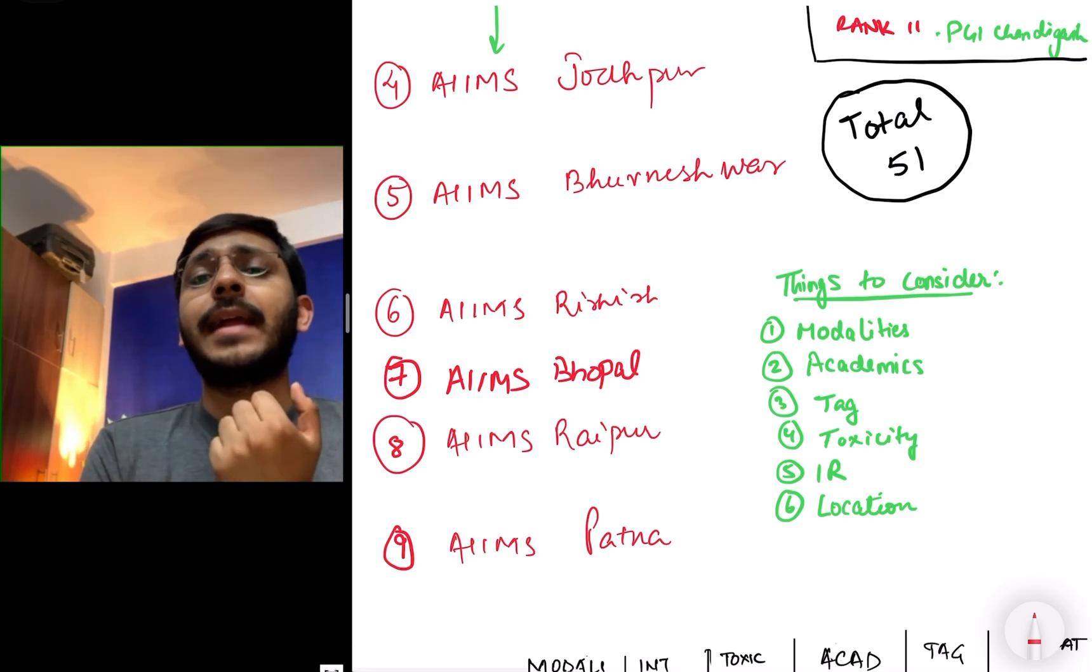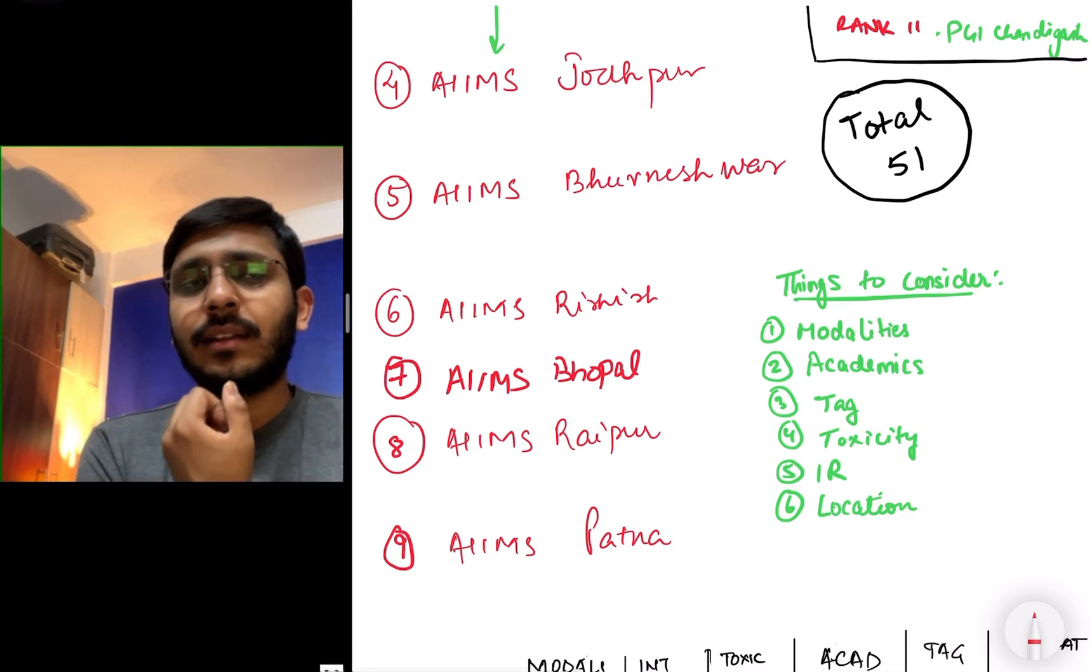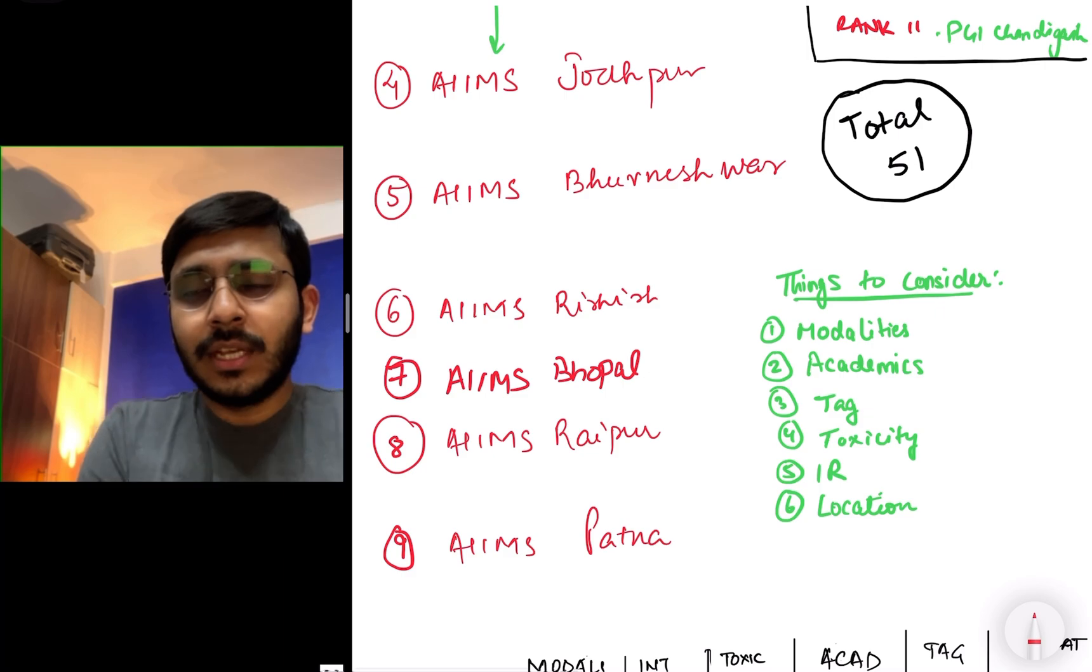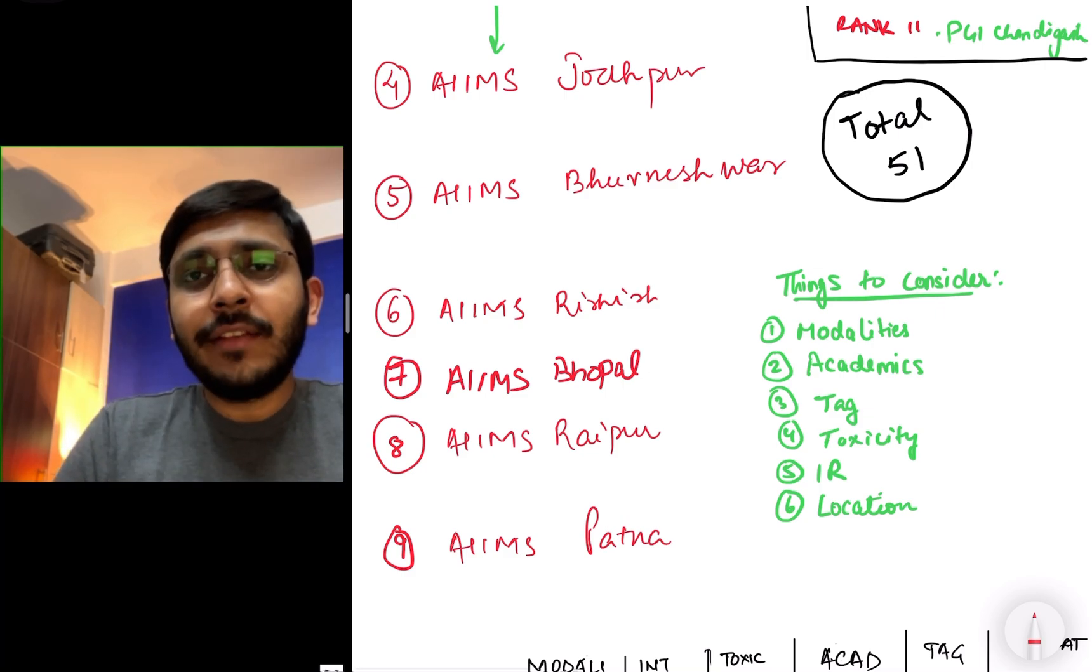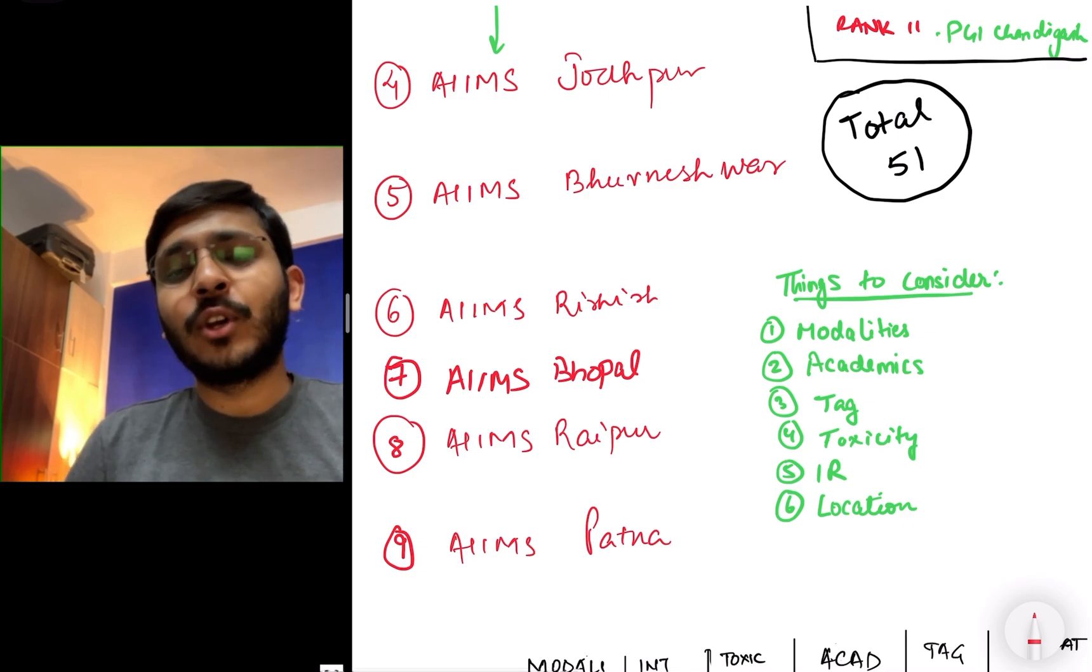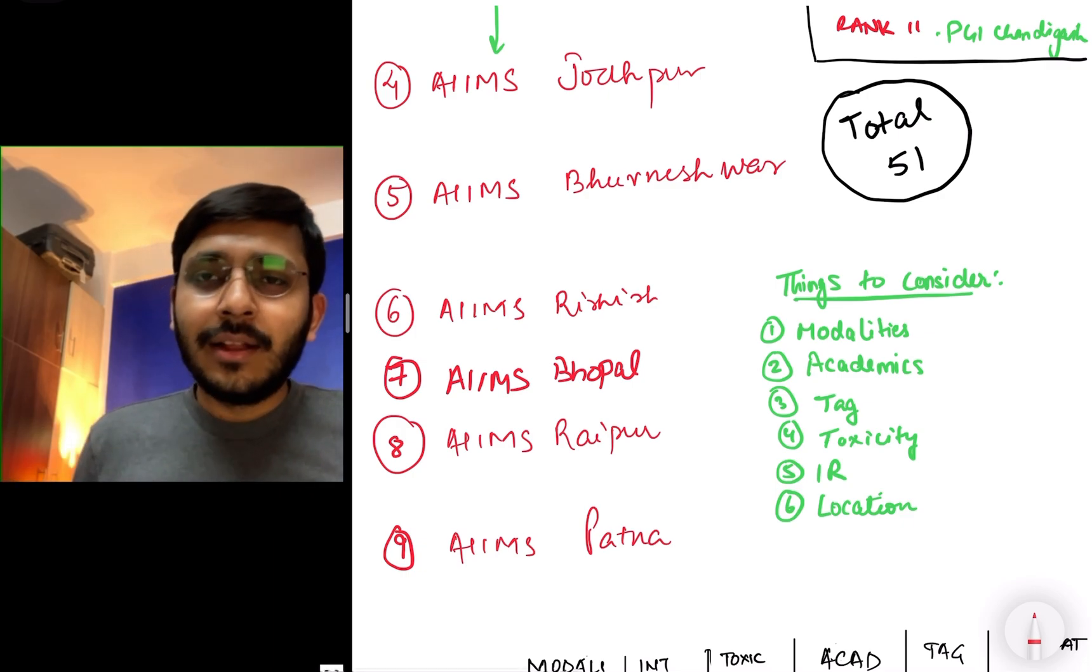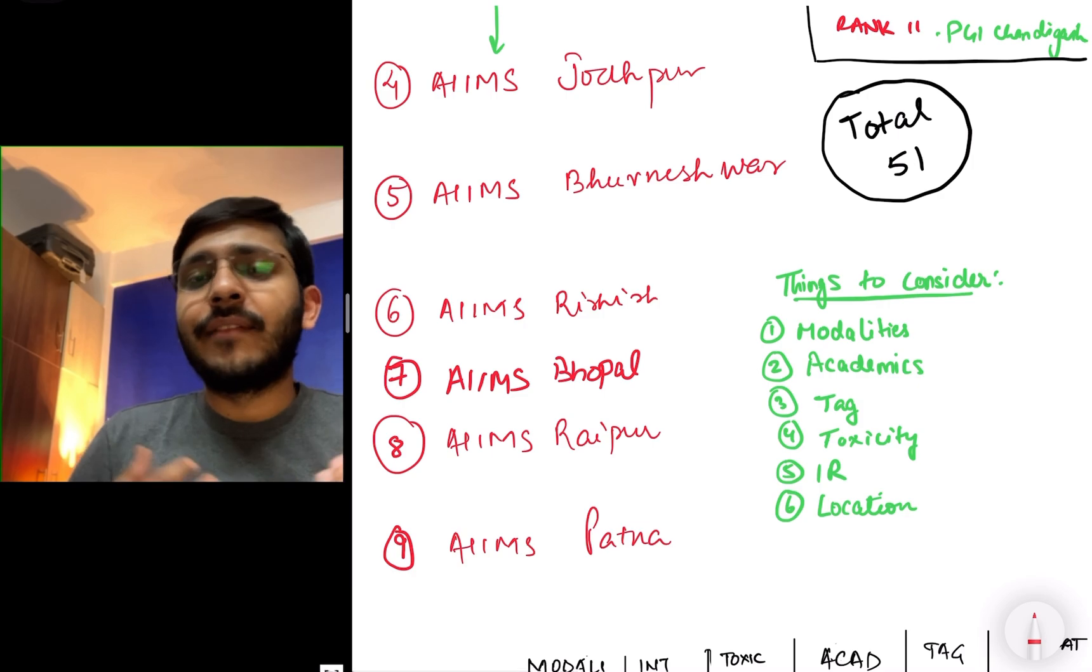Number four is toxicity. In general before choosing any speciality you should consider this because you will be spending three years of your time in that particular institute and three years of intensive hard working time. You would want to work at a place in which your mental level is at peace because you would be required to coordinate and delve into a lot of things. At number five I have considered IR exposure. I have kept IR exposure at number five for a deliberate reason because as a radiologist and as an MD radiologist you should focus on diagnostic and improving your diagnostic capabilities.